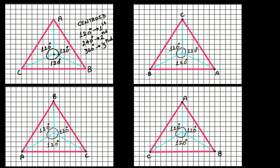So you are getting rotational symmetry at 120 degrees, at 240 degrees, and at 360 degrees. Therefore the order of rotational symmetry of an equilateral triangle is 3, because we are getting rotational symmetry 3 times — at 120 degrees, 240 degrees, and 360 degrees.